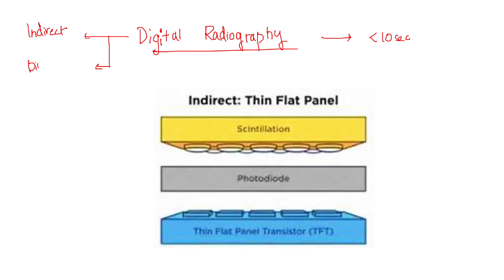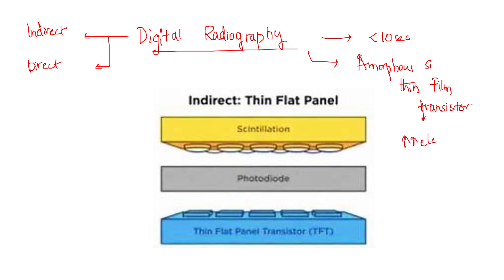There are two types of digital radiography: indirect digital radiography and direct digital radiography. In both, digital radiography contains amorphous silicon thin film transistors. This thin film transistor, made up of amorphous silicon, will amplify or increase the electric signal. Once it amplifies the electric signal, it is stored as an electrical charge. These charges are released by applying a high voltage.